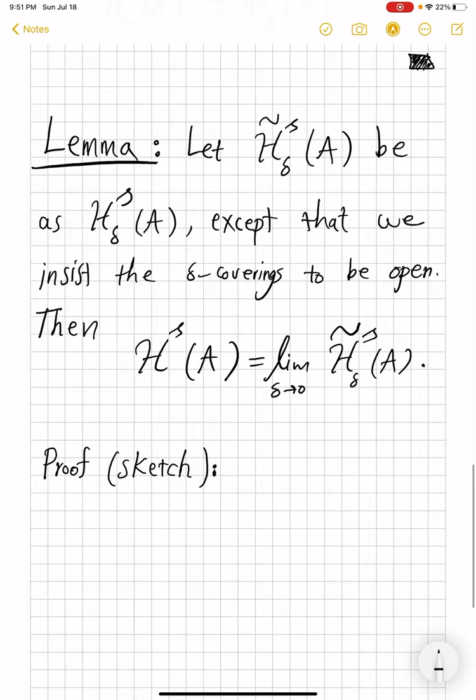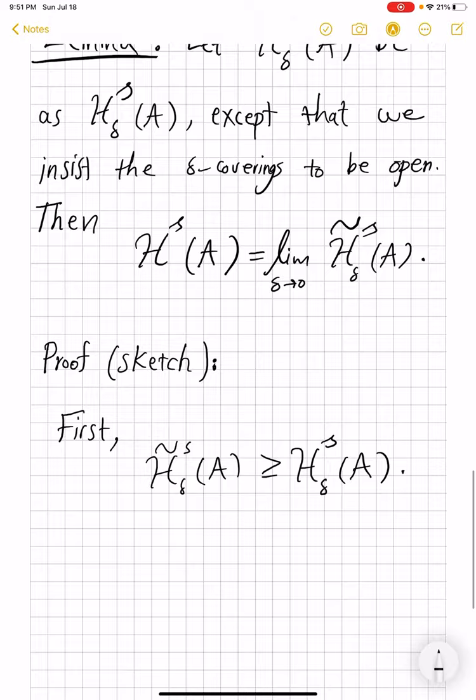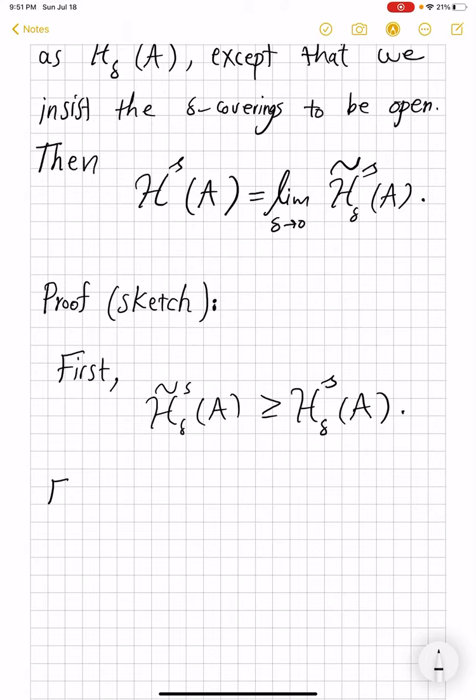So proof sketch is that, first of all, similar to the above, H̃^s_δ of A is bigger than or equal to H^s_δ of A, because again, you take infimum over more restricted collection.